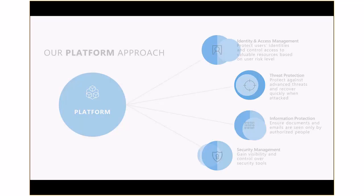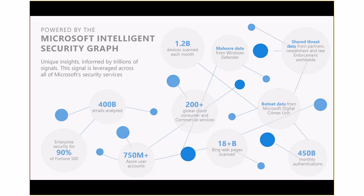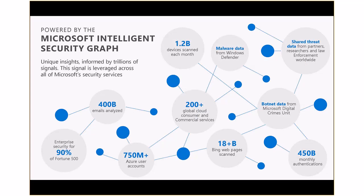Let's start with the intelligence security graph. We briefly discussed the intelligence security graph in the previous session, so I'll just do a little recap. The intelligence security graph is a massive data warehouse that Microsoft has that basically captures broad and deep signals on security from across the globe.